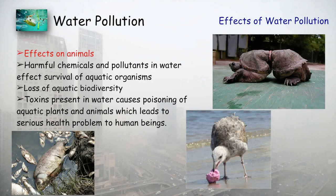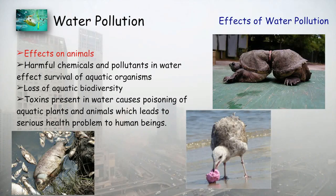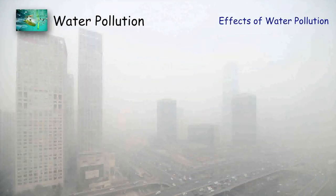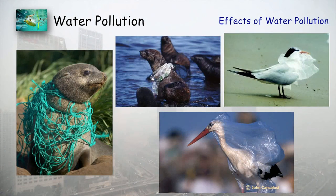Regarding effects on animals: harmful chemicals and pollutants in water affect the survival of aquatic organisms, and we are losing a large number of aquatic biodiversity. Toxins in water cause poisoning of aquatic plants and animals, leading to serious health problems for humans. Some animals like tortoises get stuck in plastic rings and suffer for their lifetime. Birds mistake plastic balls for fish and eat them, causing death.